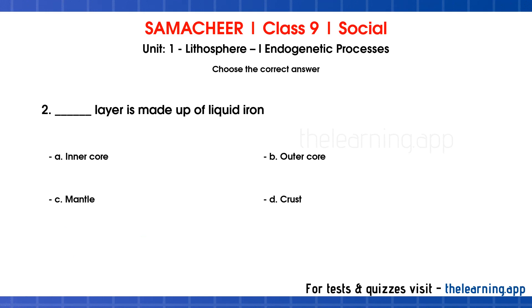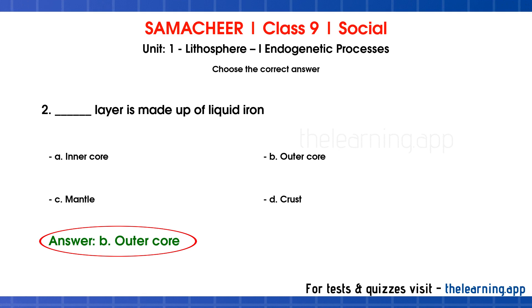Second question — the dash layer is made up of liquid iron. Options: A core, B outer core, C mantle, D crust. Correct answer is option B: outer core. The earth has three layers — crust, mantle, and core. The outer core is made up of liquid iron.